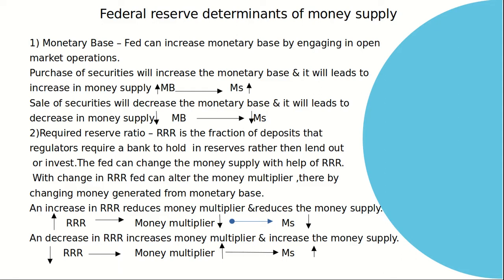Second is required reserve ratio — a fraction of deposits that regulators require a bank to hold in reserves rather than lend out or invest. These are the reserves banks keep for withdrawals. The Fed can change money supply with the help of the required reserve ratio, also known as cash reserve ratio. With a change in required reserve ratio, the Fed can alter the money multiplier, thereby changing the money generated from the monetary base. When required reserve ratio increases, the money multiplier decreases and money supply decreases. When required reserve ratio decreases, the money multiplier increases and money supply increases.